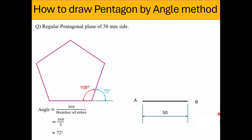From end point B, I will represent the angle of 108 degrees with an angle measuring device and draw a line. As per the nature of the regular pentagonal plane, each and every side will have a length of 50 mm. So I will mark 50 mm with the help of a scale and name that endpoint as C — one of the next points of the pentagonal plane.